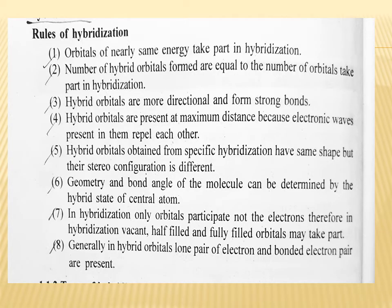The rules of hybridization: Rule one — orbitals of nearly the same energy take part in hybridization. Rule two — the number of hybrid orbitals formed is equal to the number of orbitals taking part in hybridization. Rule three — hybrid orbitals are more directional and form strong bonds.